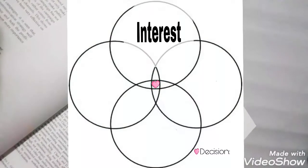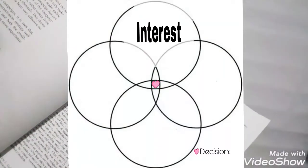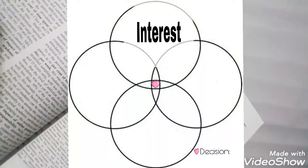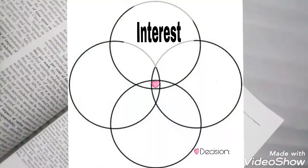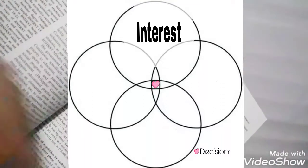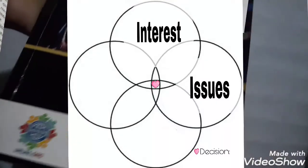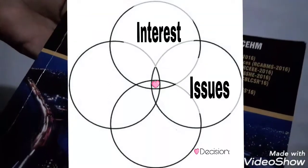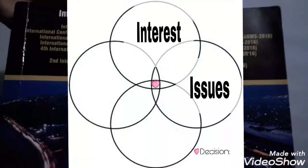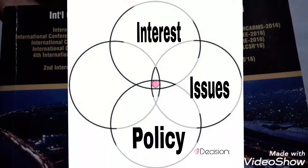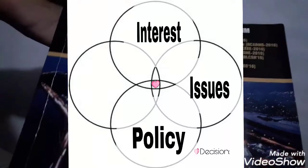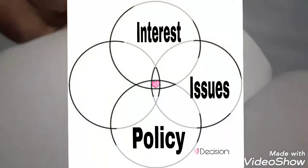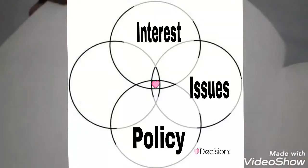First, write or think of a topic or even topics that you are really interested in — a research topic that is interesting for you; it can be anything. Then write that topic or those topics in the circle. Second, write topics which you think the world needs right now. You can base this on current events or news from television or newspapers. Third, topics that you think are needed to improve policy, or those topics relevant to creating alternative policies.